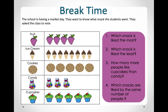Now they're asking us, how many more people like cupcakes than candy? We can count the cupcakes: 1, 2, 3, 4, 5. And we can count the candy: 1, 2, 3. We can cross out 1 cupcake for every candy bag. After matching them up, there are 2 extra cupcakes. So that means 2 more people like cupcakes than candy.